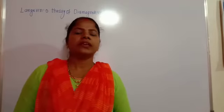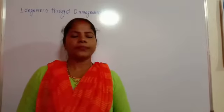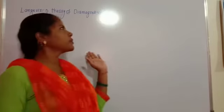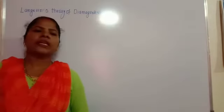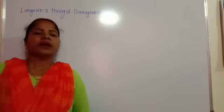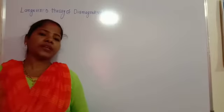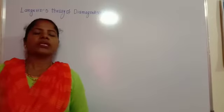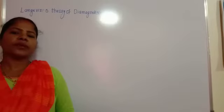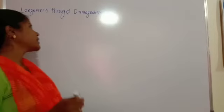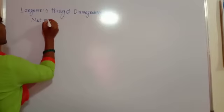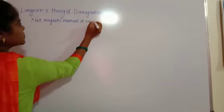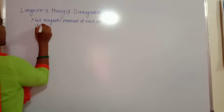Hello, good morning. In the last class we saw that the atomic magnetic moment pm is equal to the product of current into area, where the electron moves in the circular orbit. Today's topic is the Langevin theory of diamagnetism. Before starting, we need to know that in a diamagnetic material — which is weakly attracted by the magnet and moves from the stronger to the weaker part of the field — the net magnetic moment of each atom is zero.